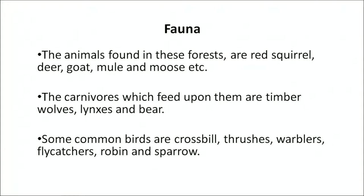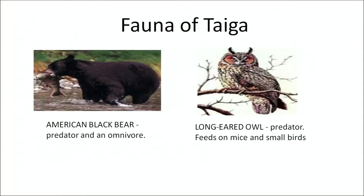Common birds found in the taiga are crossbill, thrushes, warblers, flycatcher, robin and sparrows. These are pictures of the owl and the American black bear found in this biome.